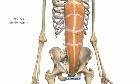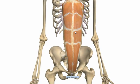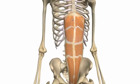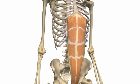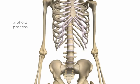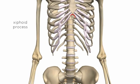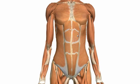The rectus abdominis muscle originates on the pubic symphysis and pubic tubercle. Superiorly, it inserts along the costal margin — the costal cartilages — and also on the xiphoid process. What this muscle does is flex the vertebral column, and it's also involved in the other functions mentioned at the start of this tutorial.